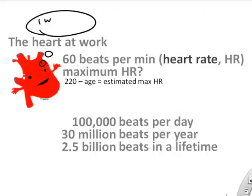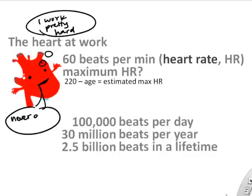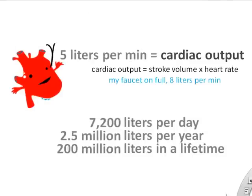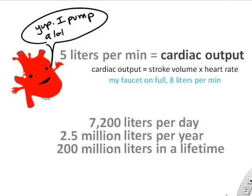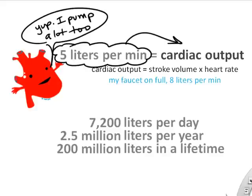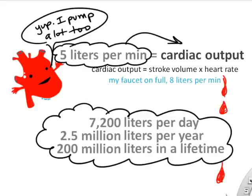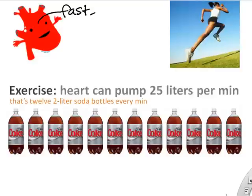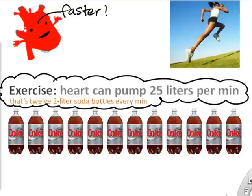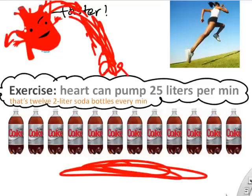I wanted to show some statistics about how much work your heart does. Your heart has to beat all day, every day, every minute. At rest, your heart is pumping about five liters per minute — and over a day, a year, a lifetime, that's enormous. When you exercise, cardiac output can reach 10, 15, even 25 liters of blood per minute.